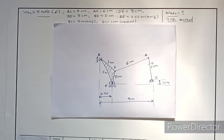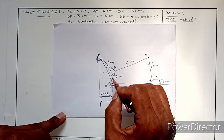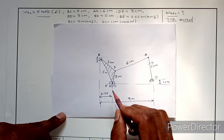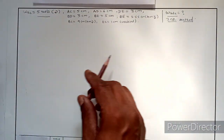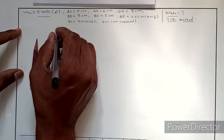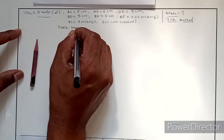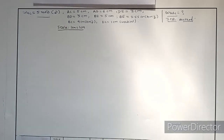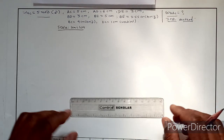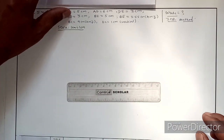The very first step is to draw the configuration diagram using a suitable scale. Since all dimensions are given in centimeters and the range is well-suited for A4 size paper, we will take a scale of 1 is to 1. So we write down the scale: 1 centimeter equals 1 centimeter. Then draw the configuration diagram.